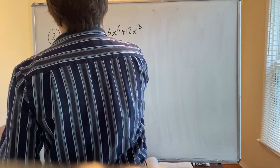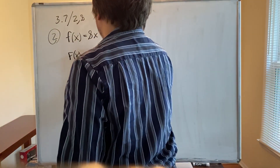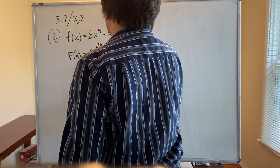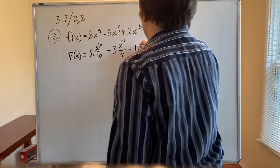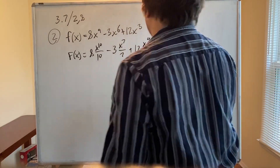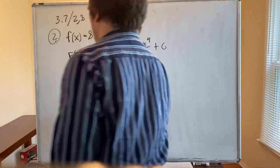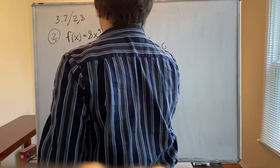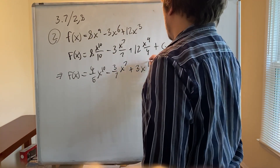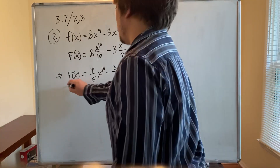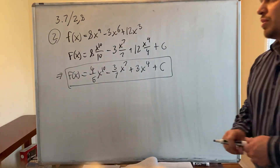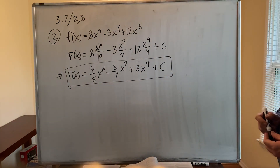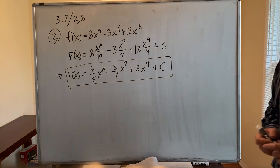The antiderivative is 8·(x¹⁰/10) - 3·(x⁷/7) + 12·(x⁴/4) + C. Simplifying: F(x) = (4/5)x¹⁰ - (3/7)x⁷ + 3x⁴ + C. That is the most general antiderivative of f(x). It's pretty straightforward — that's number two.